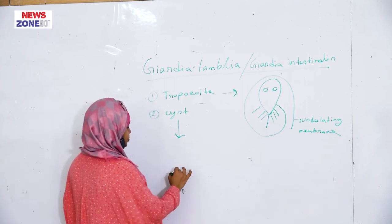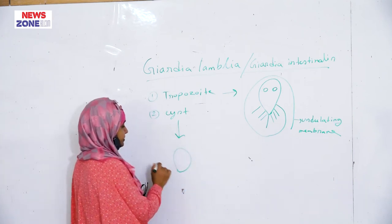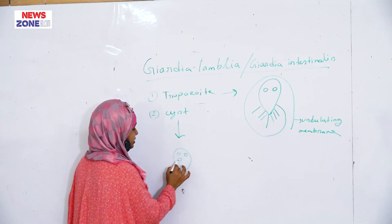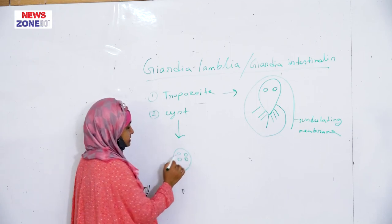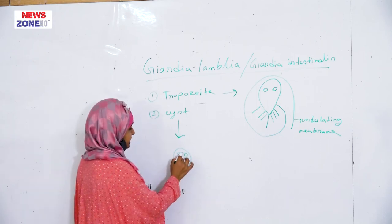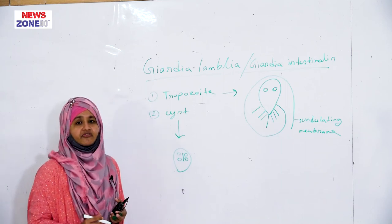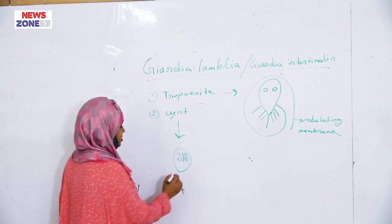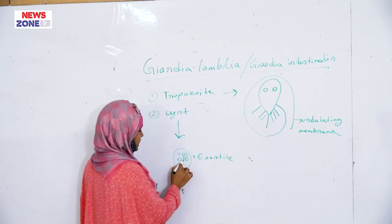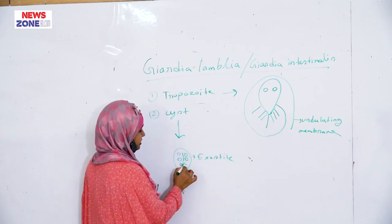The cyst is oval in shape. There are two pairs of nucleus, an axostyle — which is the remnant of flagella — and a costa.